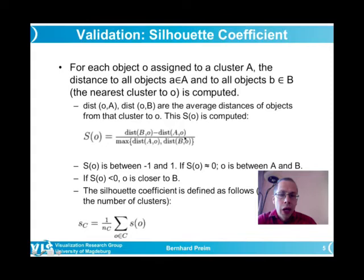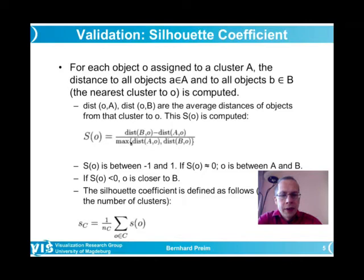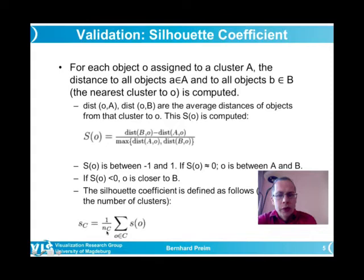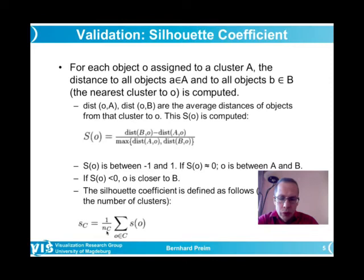The denominator is the maximum of the distance from O to objects of the same cluster or the closest other cluster, so the value lies between minus 1 and 1 — it cannot exceed 1. That is the silhouette coefficient for one cluster A. To come up with an overall assessment involving multiple clusters, you sum over all clusters and divide by the number of clusters. This gives again a value between minus 1 and 1. A value of around 0.8, clearly above 0.5, would indicate a quite good clustering result.